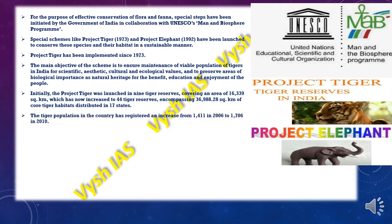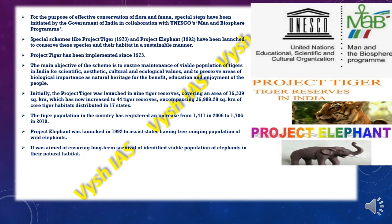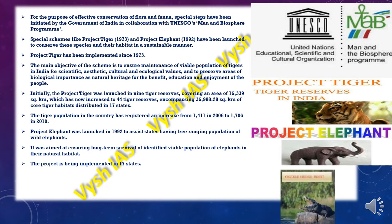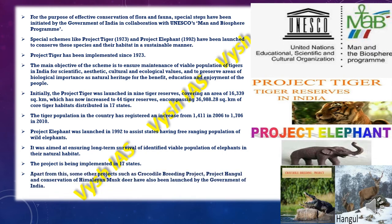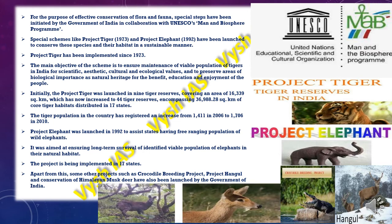The tiger population in the country registered an increase from 1411 in 2006 to 1706 in 2010. Project Elephant was launched in 1992 to assist states having free-ranging populations of wild elephants, aimed at ensuring long-term survival of viable populations of elephants in their natural habitat, and has been implemented in 17 states. Other projects include the Crocodile Breeding Project, Project Hangul, and conservation of the Himalayan musk deer.